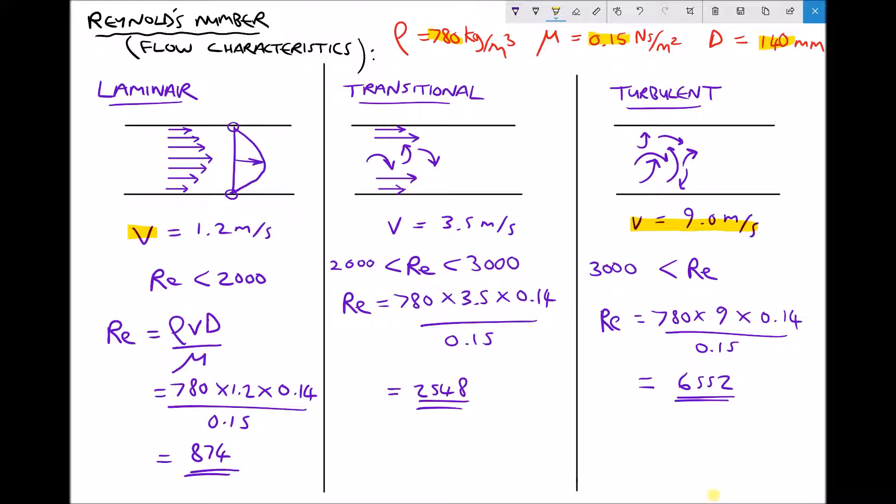The reason why I saved transitional flow until last is because transitional flow is a mixture of laminar and turbulent flow. In fact, what we see is close to the walls of the pipe, we actually have laminar flow, but within the centre of the pipe we have turbulent flow. As the Reynolds number gets closer to 3000, we would see more of that laminar flow replaced with turbulent flow in the centre of the pipe, until eventually the flow was fully turbulent when the Reynolds number reached 3000.